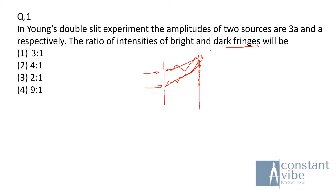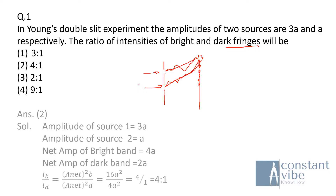We need to find the ratio of intensities of bright and dark fringes. The answer is option 2. The amplitude of source 1 is 3A and the amplitude of source 2 is A.